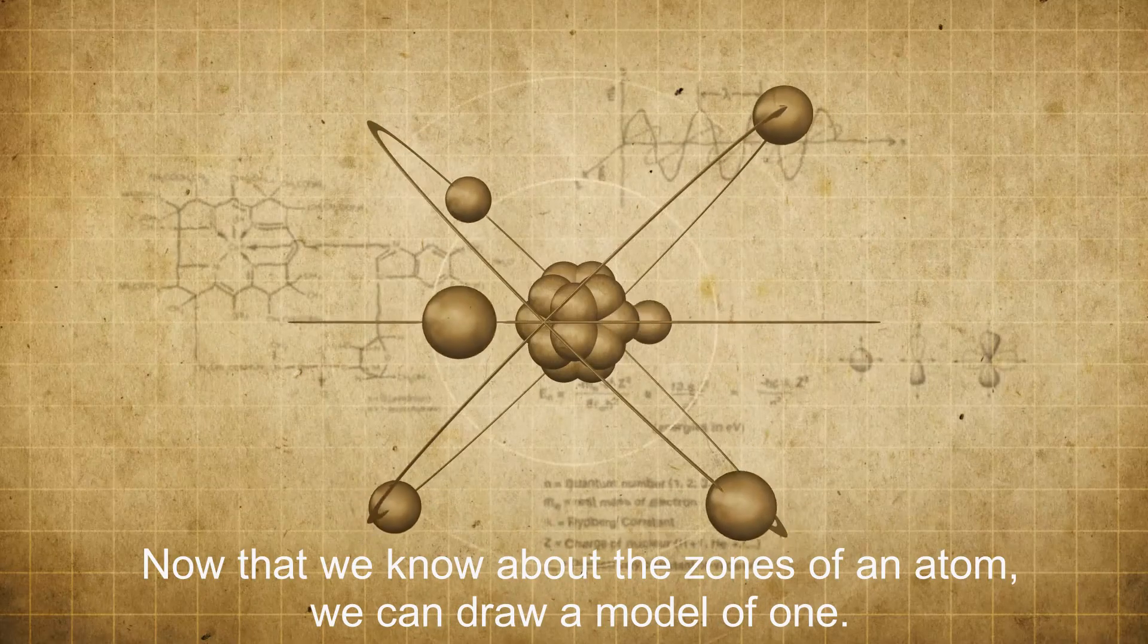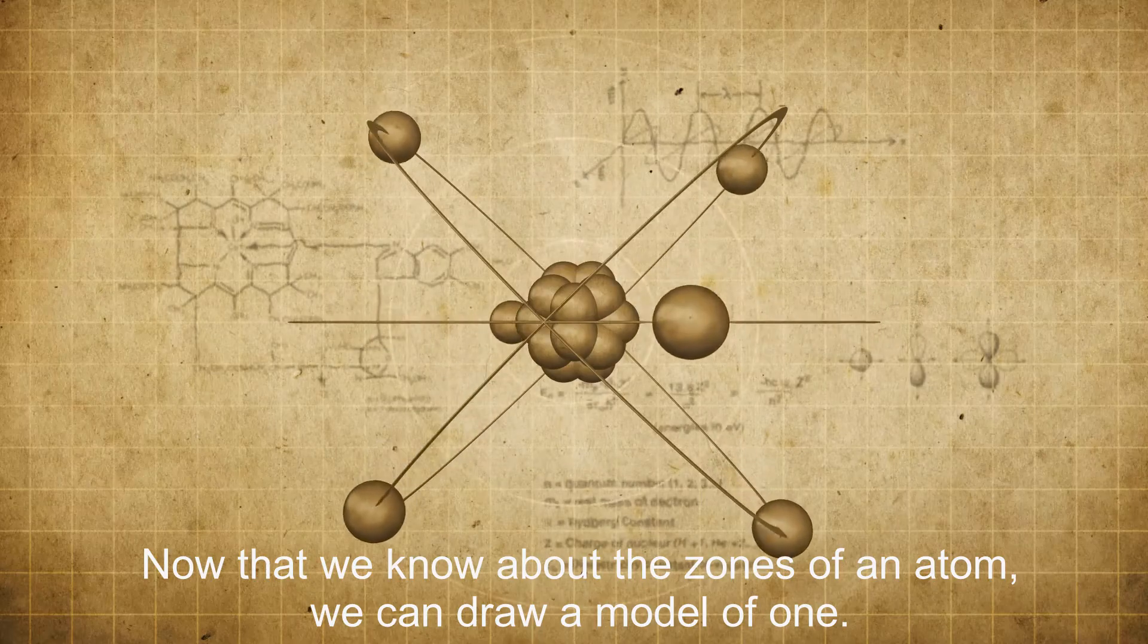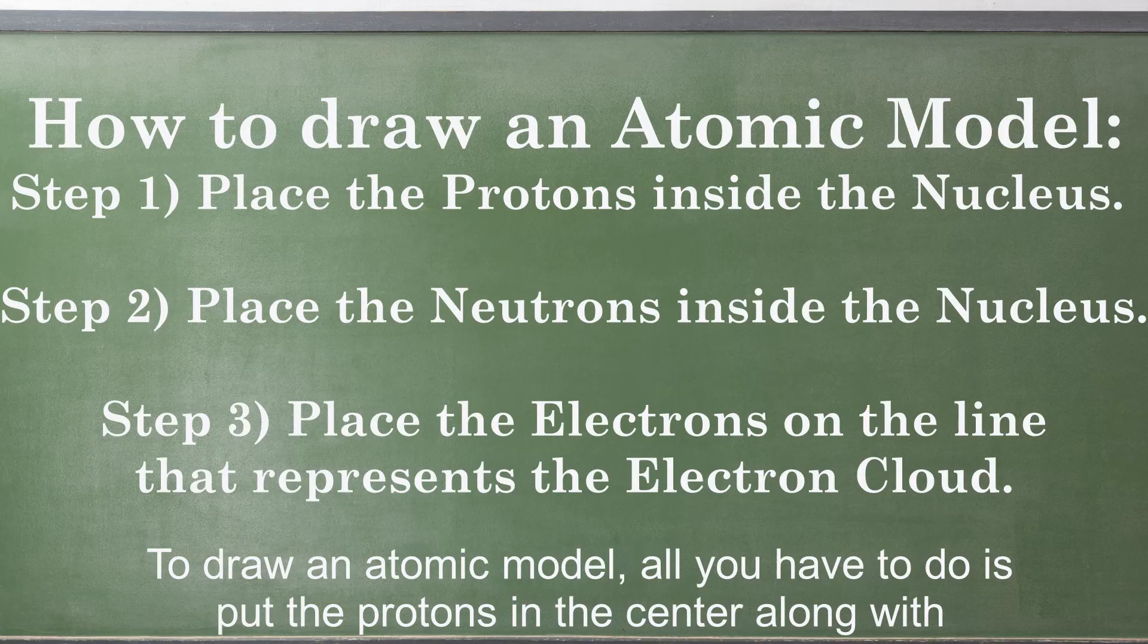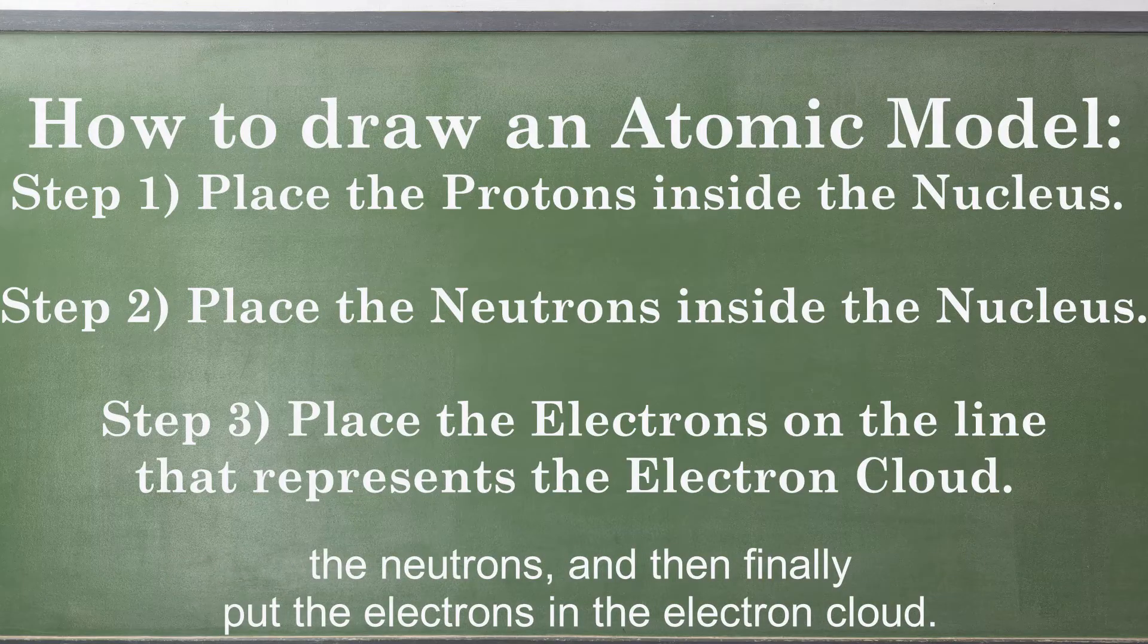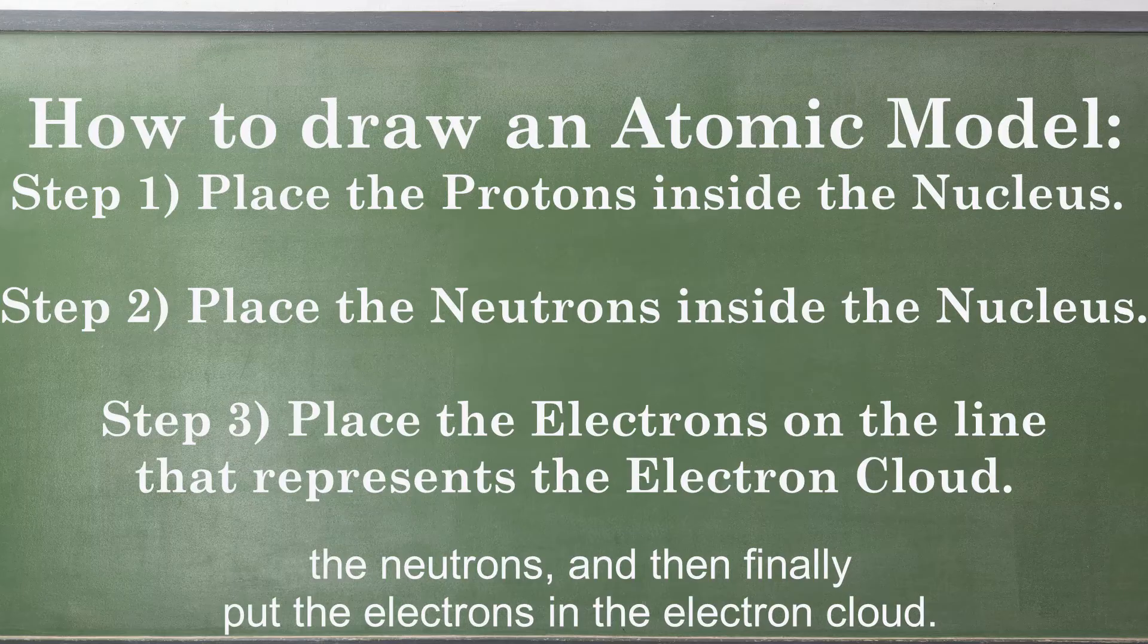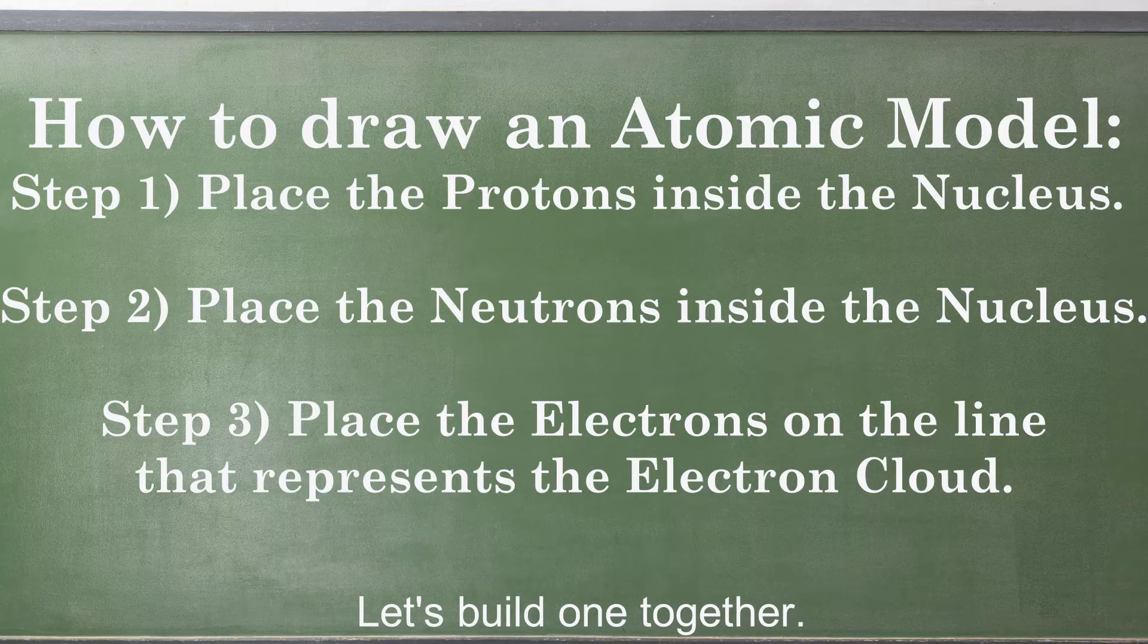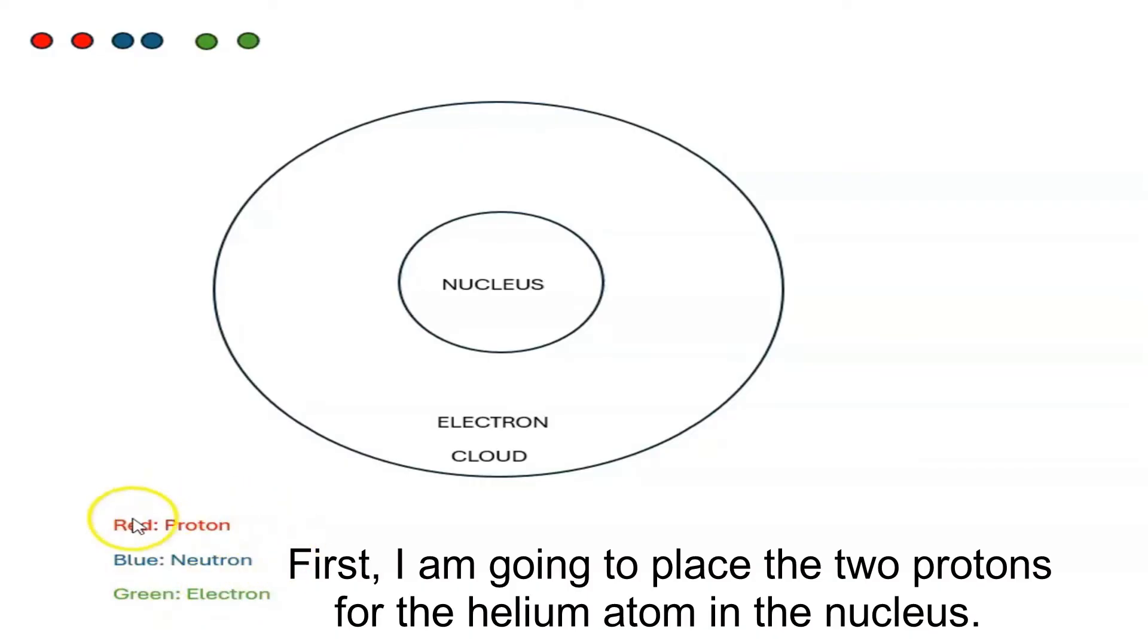Now that we know about the zones of an atom, we can draw a model of one. To draw an atomic model, all you have to do is put the protons in the center along with the neutrons and then finally put the electrons in the electron cloud. Let's build one together. First, I am going to place the two protons for the helium atom in the nucleus.